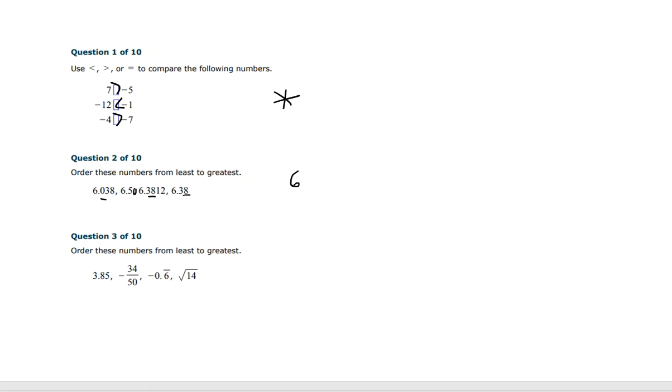So 6.038, that is our smallest decimal value. And then we've got these two that are pretty similar. But because this one has the 1, 2 after the 0.38, that means the 6.38 is just a little bit smaller than the 6.3812. This one just has a little bit more, and then we would have 6.5.